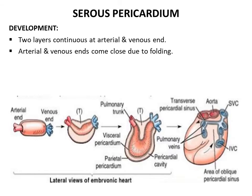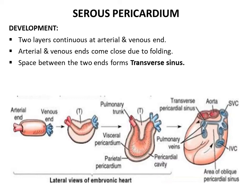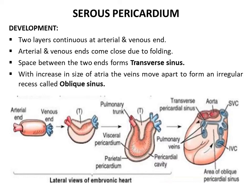As the heart tube folds, the two ends come close to each other, forming a small space or recess known as the transverse sinus of pericardium. At the venous end, the atria develop and the veins enter — the four pulmonary veins and the two vena cavae. As the atria increase in size, the veins move apart, forming an irregular recess called the oblique sinus. Thus, two recesses — the transverse sinus and the oblique sinus — develop in the serous pericardium.